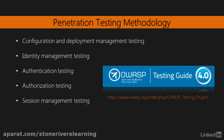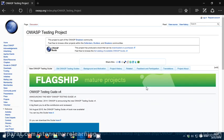You may be wondering what areas should you test during this process. These are some of the most important ones to cover: Configuration and Deployment Management Testing, Identity Management Testing, Authentication Testing, Authorization Testing, Session Management Testing, Input Validation Testing, Error Handling, Cryptography, Business Logic Testing, and Client Side Testing. We are going to cover some of these areas in this training. I encourage you to expand your knowledge on these areas by reading the OWASP Testing Guide.